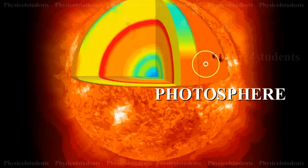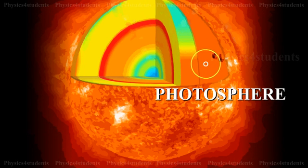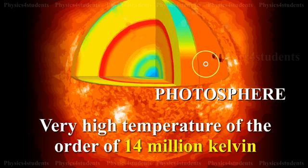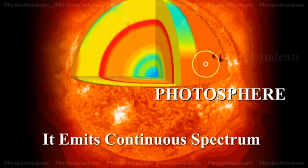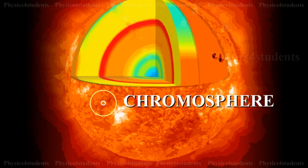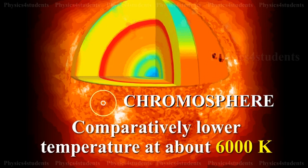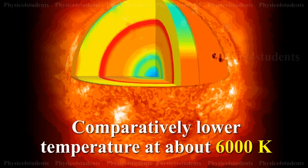The central core of the sun is called Photosphere, which is at a very high temperature of the order of 14 million Kelvin. It emits continuous spectrum. The sun's outer layer is called Chromosphere. This is at a comparatively lower temperature at about 6000 Kelvin. It contains various elements in gaseous state.